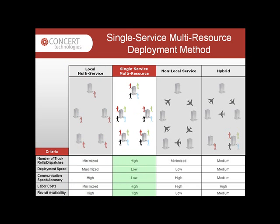In the single-service multi-resource deployment method, the technology rollout company uses multiple local field technicians. Each technician specializes in a single service. Compared to the local multi-service, this deployment method has low deployment and communication speed and accuracy because it has more technicians required for all services. This means more people to pay as well as more to communicate with, and an increased risk of scheduling conflicts or no-shows.